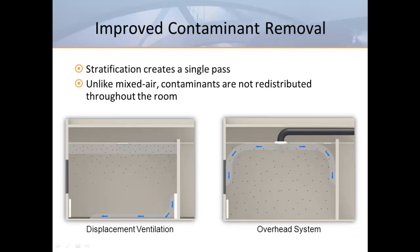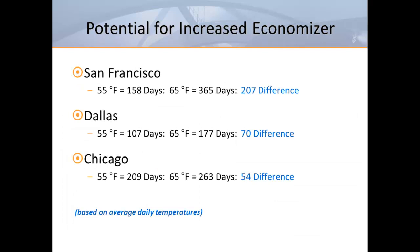Displacement ventilation can be thought of as a single-pass system. Unlike a mixed air system that tends to distribute contaminants more or less evenly throughout the entire room, displacement uses natural buoyancy to collect pollutants at the ceiling where they can exit the room, resulting in lower concentrations in the occupied zone. In areas with mild temperatures and low humidity, economizers make use of outdoor air to reduce operating costs while improving indoor air quality. The higher supply temperatures associated with displacement could have a major impact depending on where your building is located.